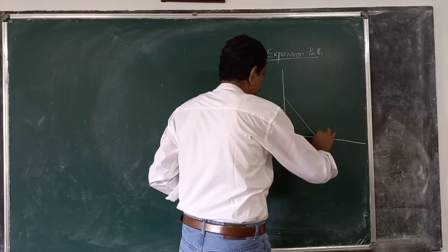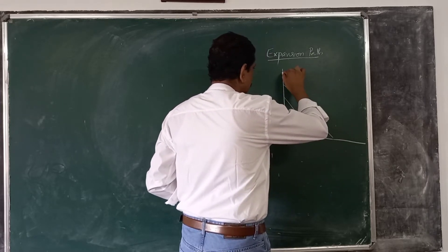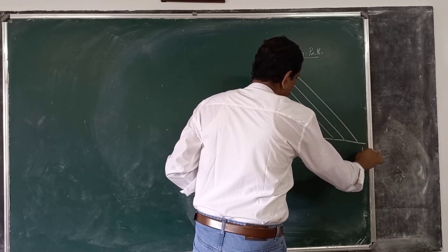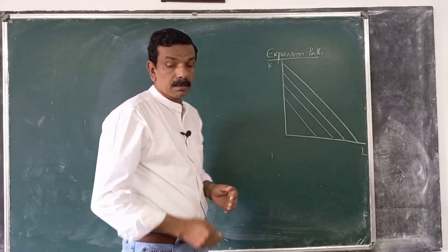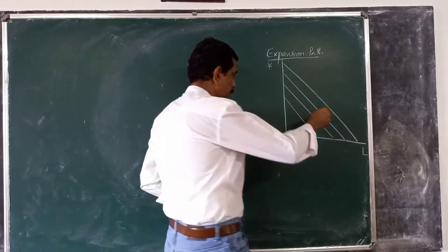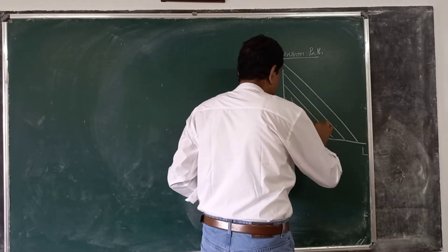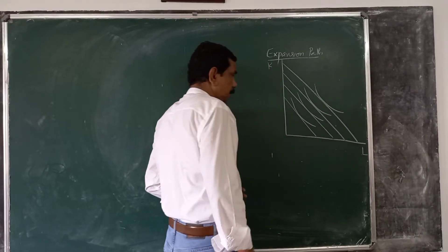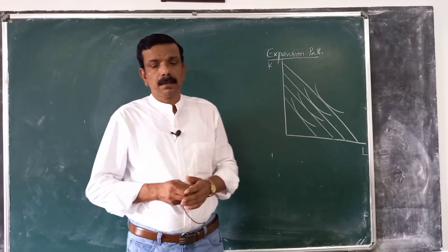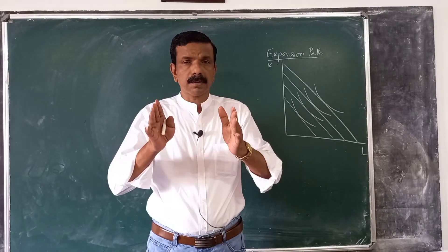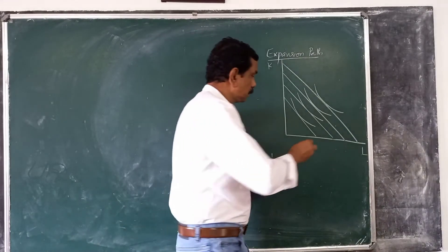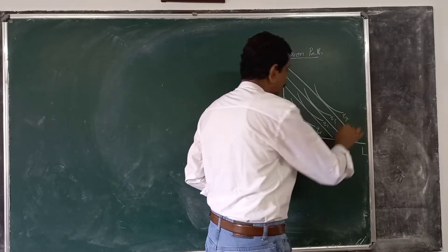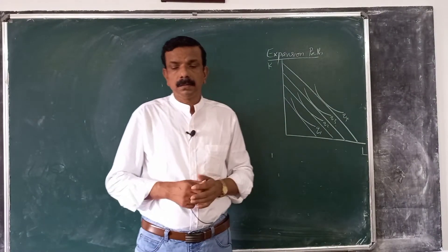Let us see this graphically. We have different isocost lines, with labor and capital on the axes, and different isoquants representing output levels q1, q2, q3, q4, etc.